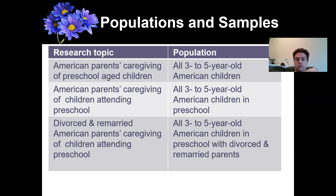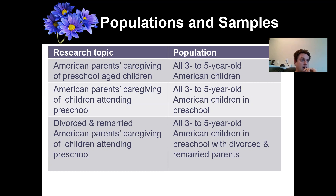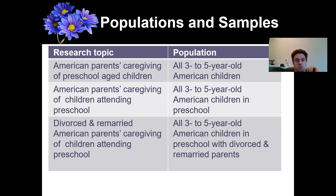Your population can vary quite a bit — it can be quite large or relatively smaller. If I'm looking at some sort of memory mechanism, that might apply to basically everyone with a normal functioning memory. Something like divorced and remarried American parents caregiving of children is relatively smaller, but it varies depending on your research question.